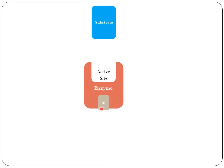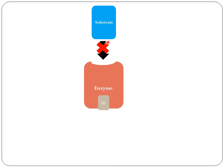Because the non-competitive inhibitor does not resemble the substrate, it will not sit on the active site — the substrate can normally sit there. Instead, the non-competitive inhibitor binds to another region of the enzyme. When it does that, the shape of the enzyme is altered and deformed, which affects the active site so the substrate can no longer bind.